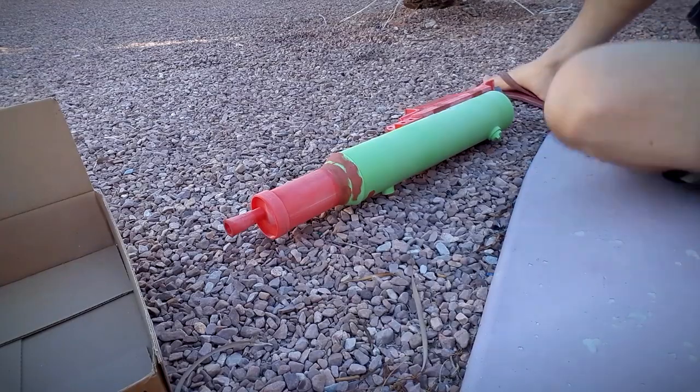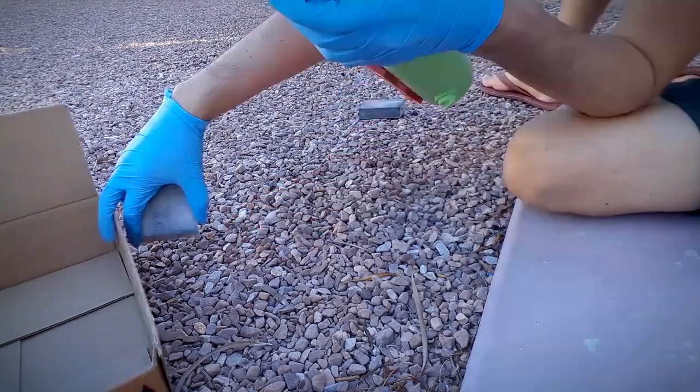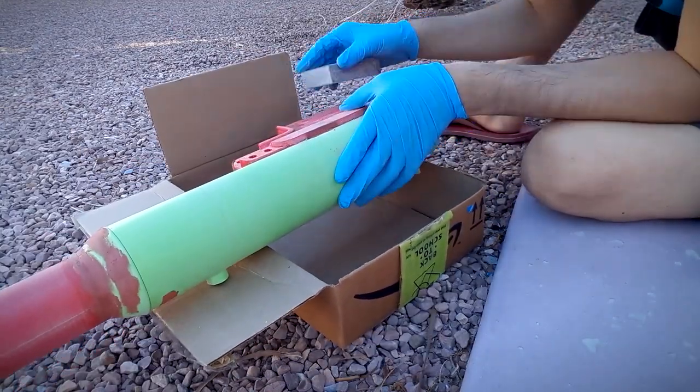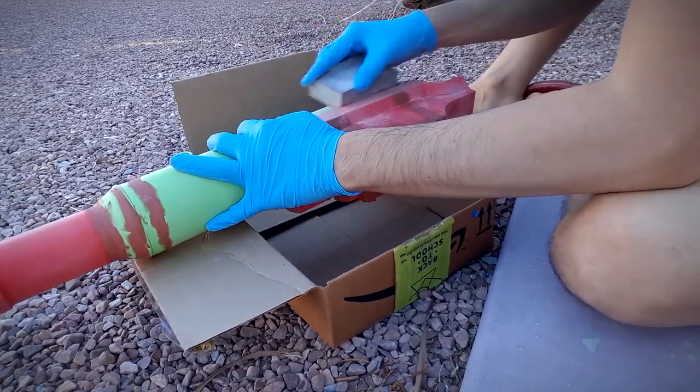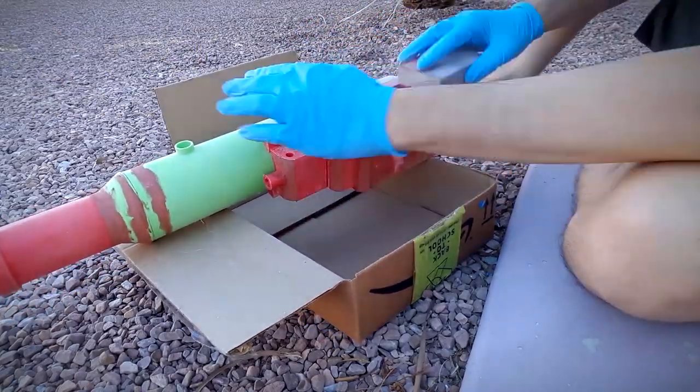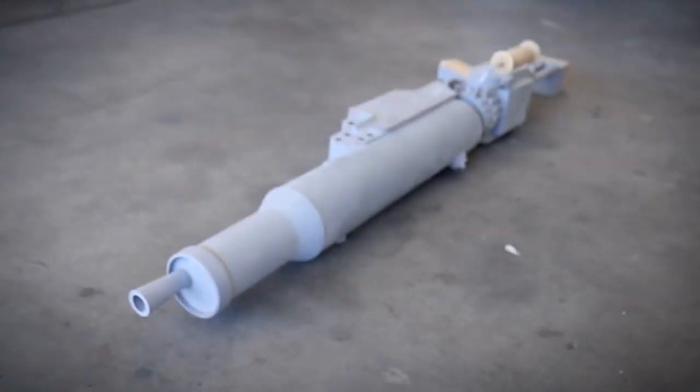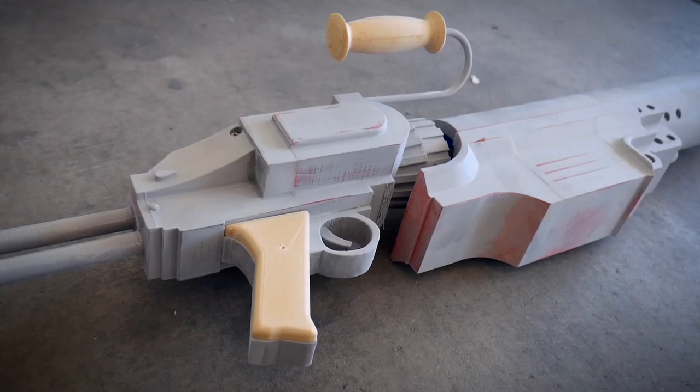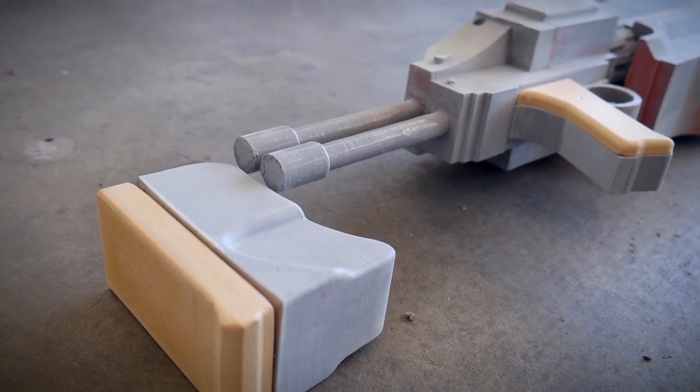Once it dried, I sanded the excess off until it was smooth. For this stage, I used 200 to 800 grit sandpapers. You'll have to repeat this process of sanding, spraying, filling, and then sanding again until the surface is acceptably smooth and you cannot see or feel any layer lines or gaps.